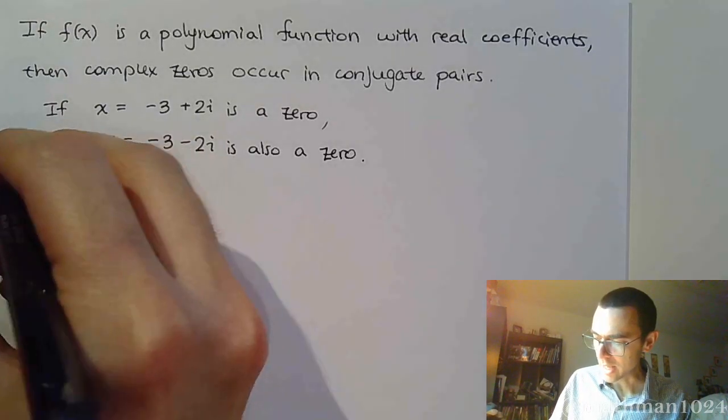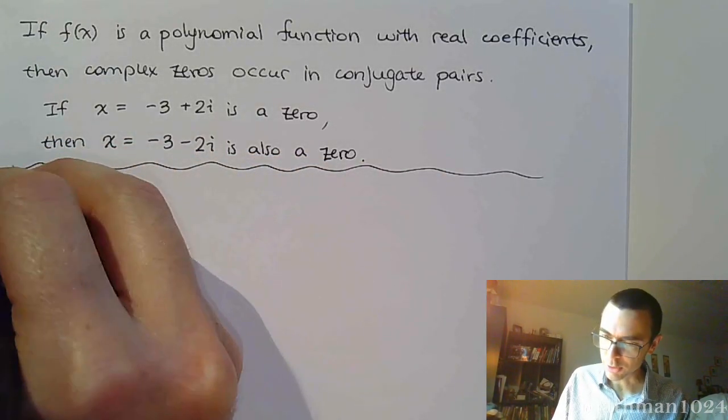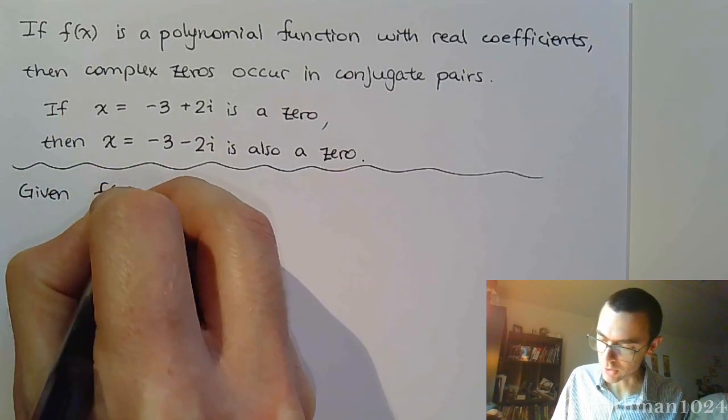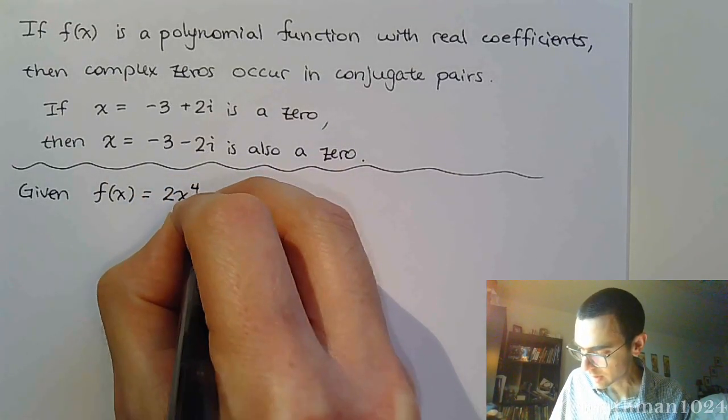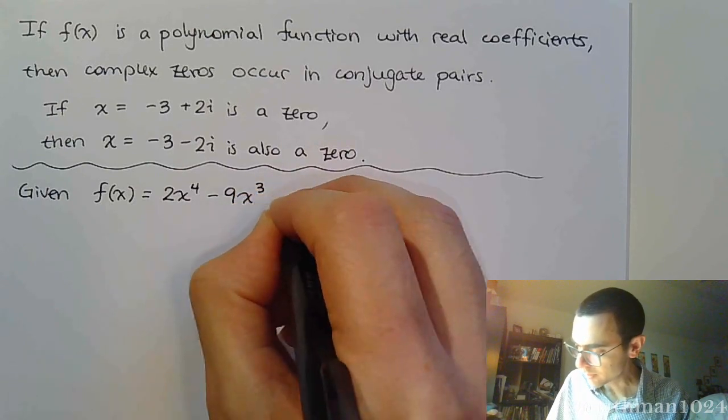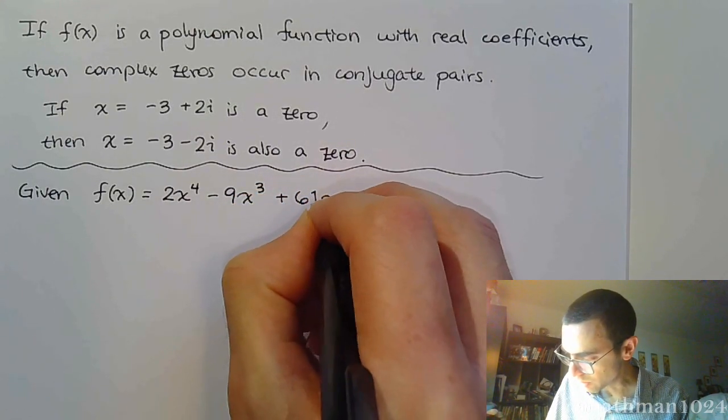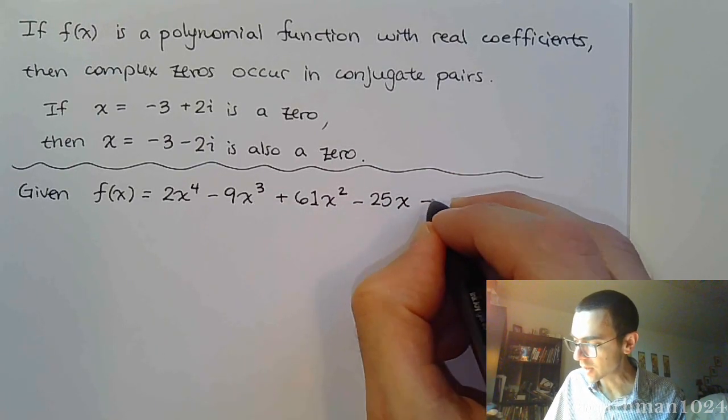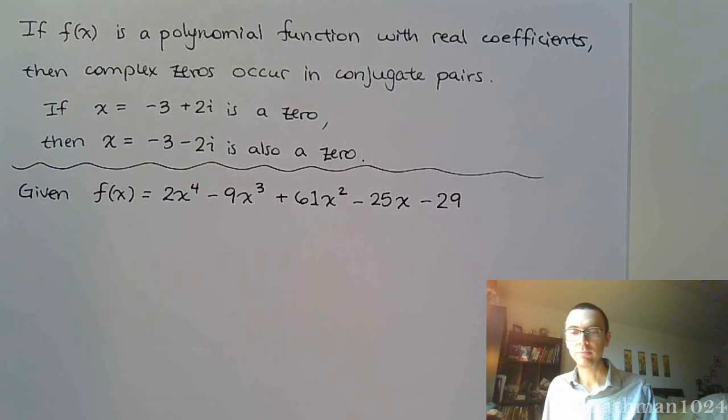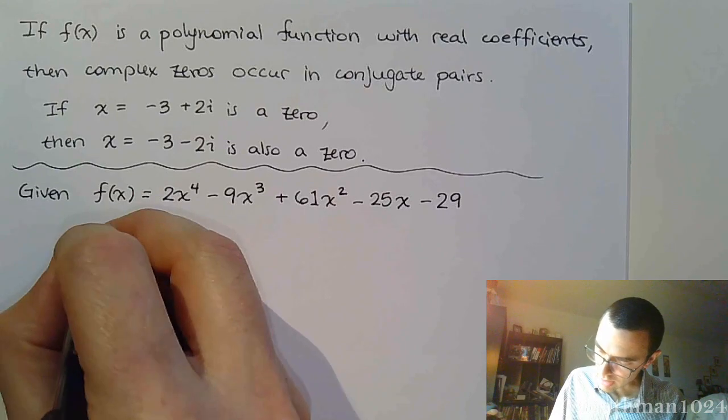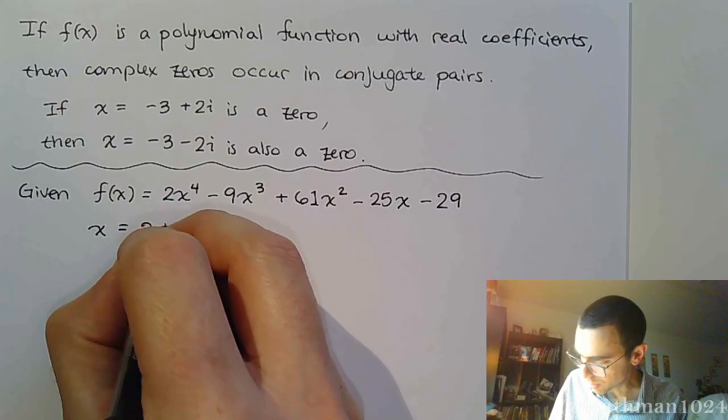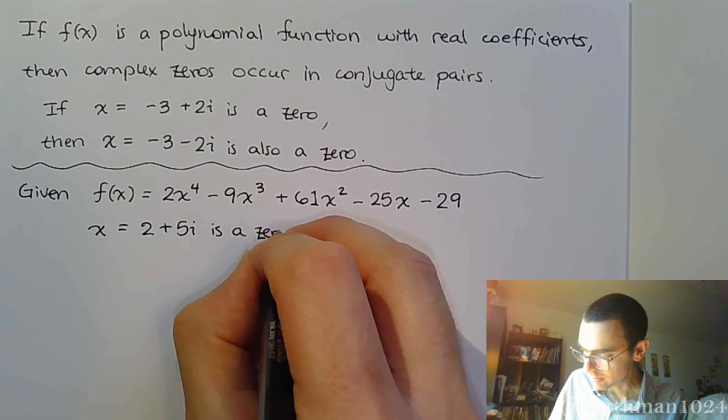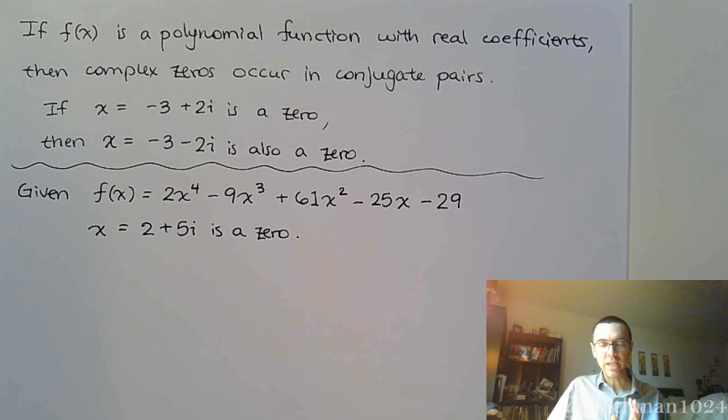So, let's take that information and apply it to this problem. Suppose that I give you the function, the polynomial function, 2x^4 - 9x^3 + 61x^2 - 25x - 29. And then I say this: x equals 2 + 5i is a zero. So, this is the information that I'm giving you.